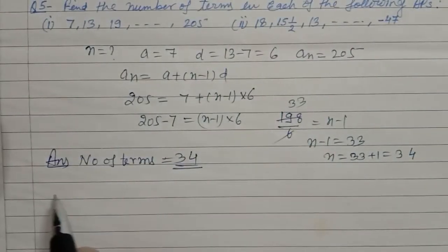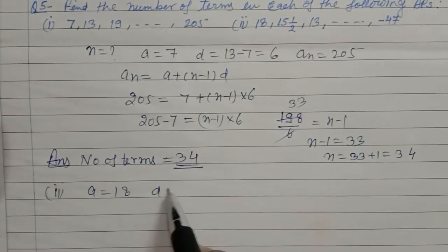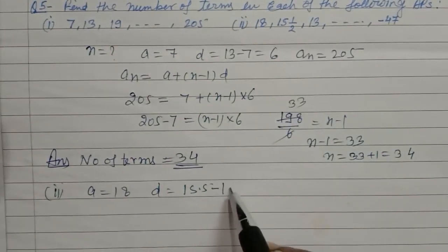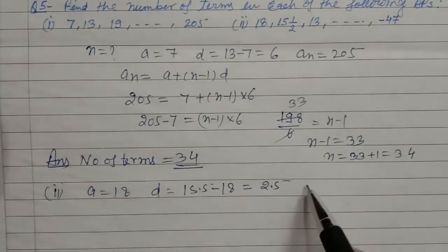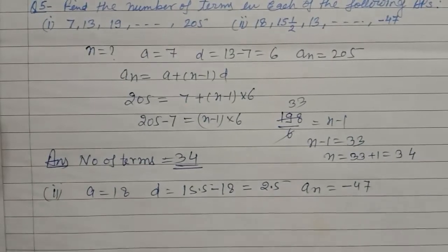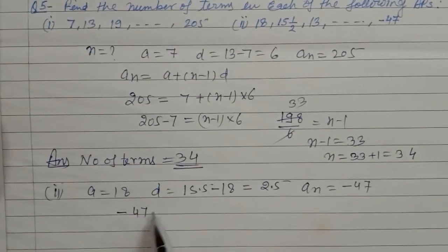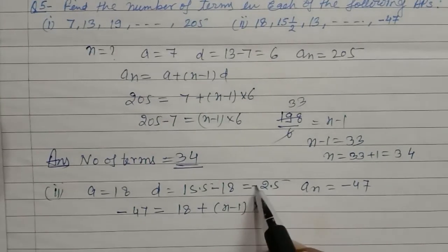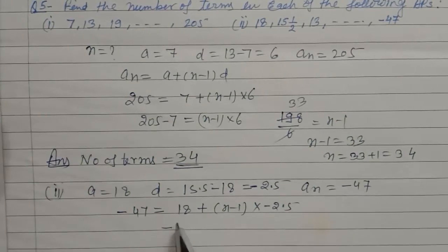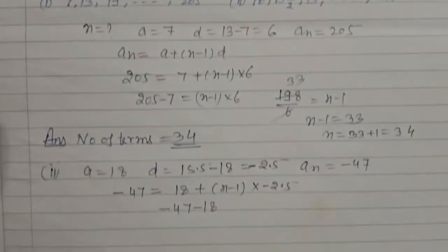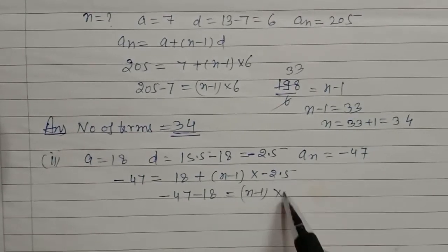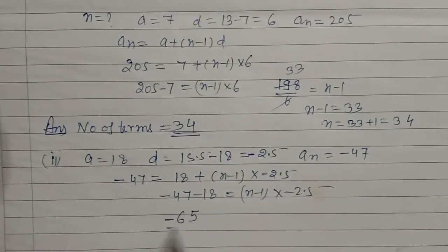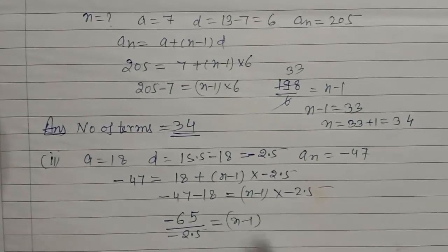اب second part solve کرتے ہیں۔ Second part میں: a is equal to 18، d is equal to 15.5 minus 18 تو یہ آجائے گا minus 2.5، اور an is equal to minus 47۔ Same formula apply کریں گے: minus 47 is equal to a plus n minus 1 into d، تو d آجائے گا minus 2.5۔ minus 47 minus 18 equal to n minus 1 into minus 2.5۔ یہ آجائے گا minus 65 upon minus 2.5 is equal to n minus 1۔